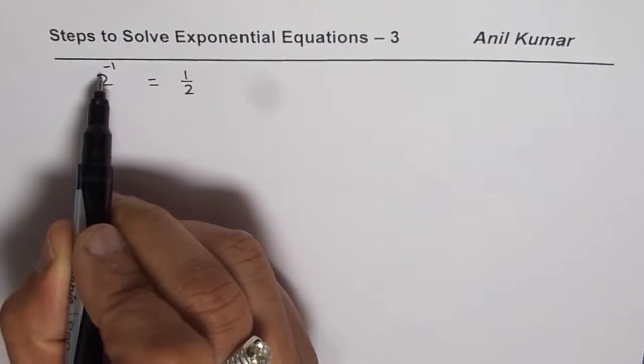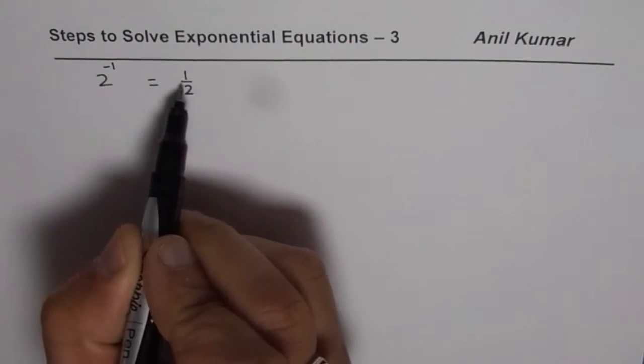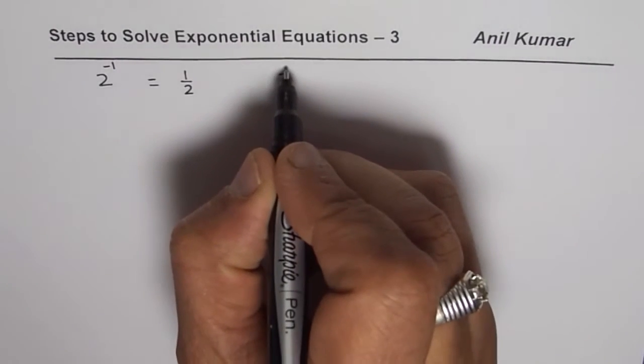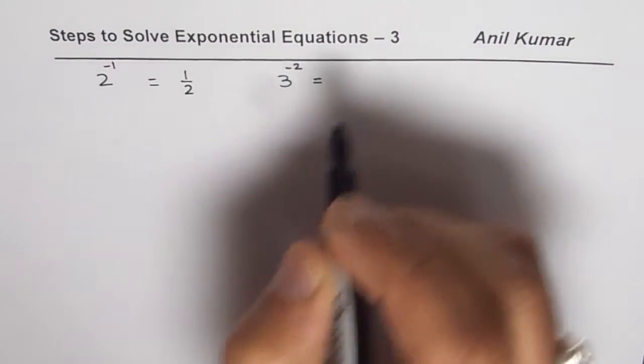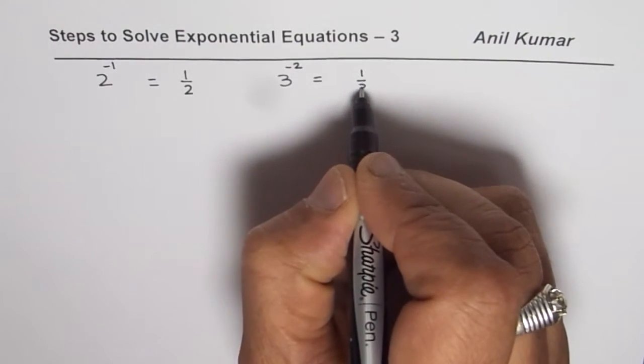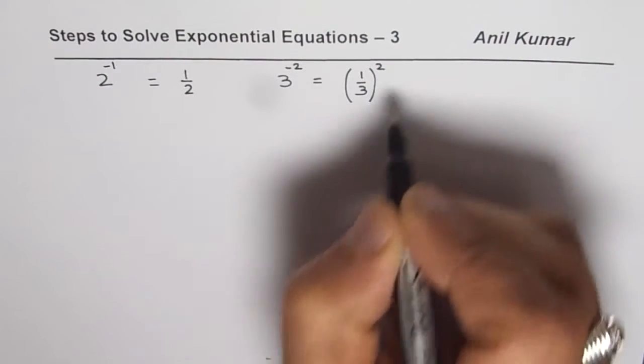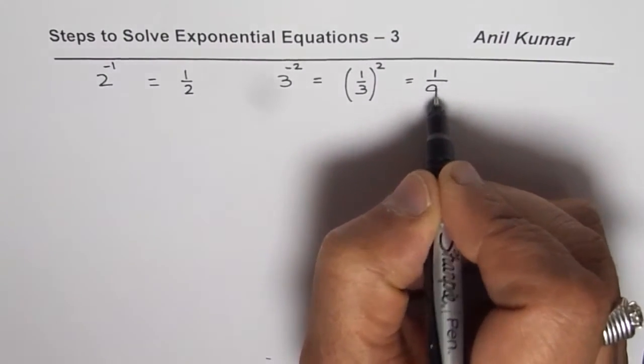So whenever you have negative power you need to write the number, the base, as its reciprocal. If I have, let us say, 3 to the power of minus 2, it means what? It means 1 over 3 whole square. Or you could say it is 1 over 3 square or 9.